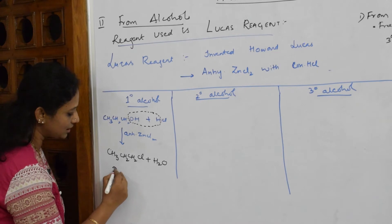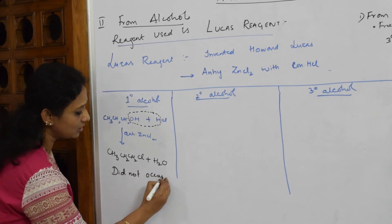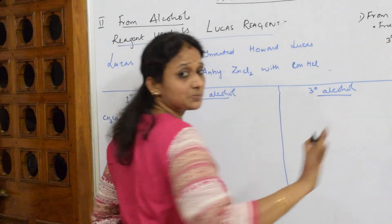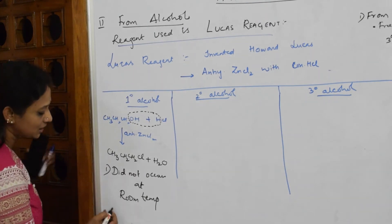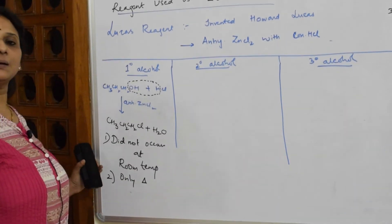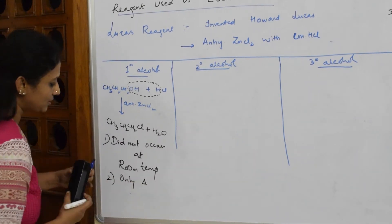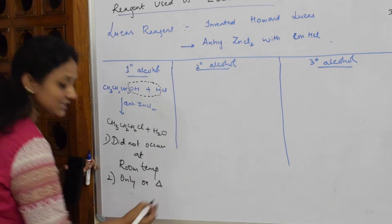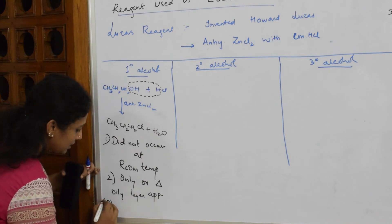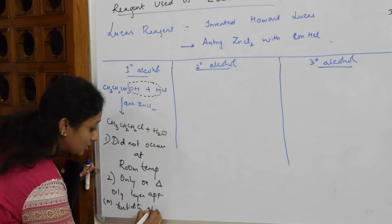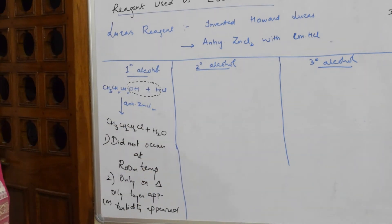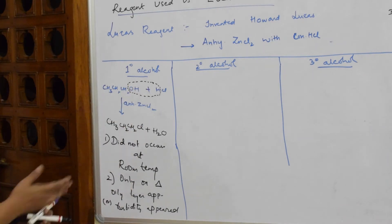But what was observed in the lab is that with primary alcohols this reaction did not occur at room temperature. Because primary carbocation is least preferred and least stable, it did not occur at room temperature. Only on heating did the turbidity appear — that is, a light oily layer formed in the test tube. So turbidity or oily layer appeared only on heating, after a long time.